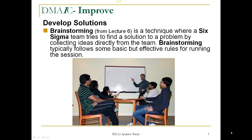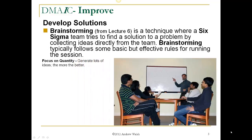Brainstorming, which we discussed in Lecture 6, is a technique where a Six Sigma team tries to find a solution to a problem by collecting ideas directly from the team. Brainstorming typically follows some basic but effective rules for running the session. You should focus on quantity — generate lots of ideas, the more the better.